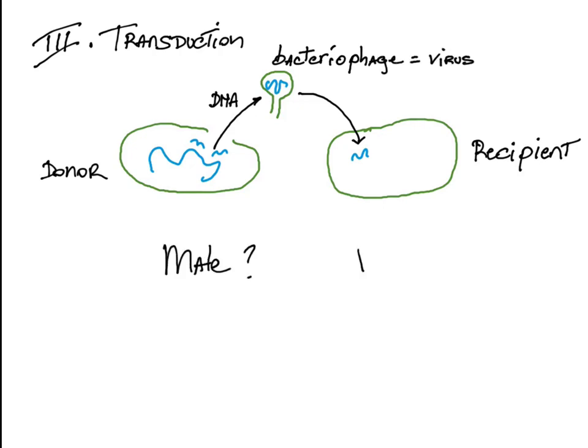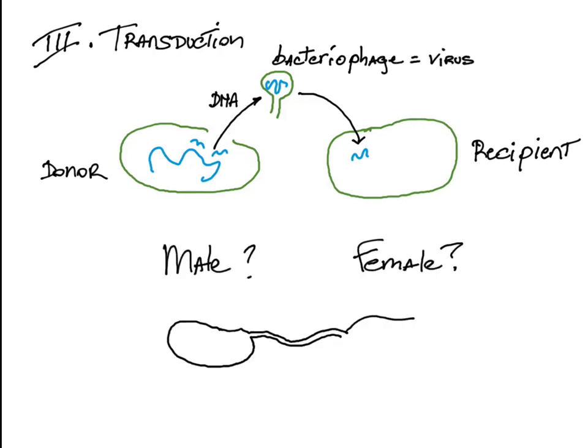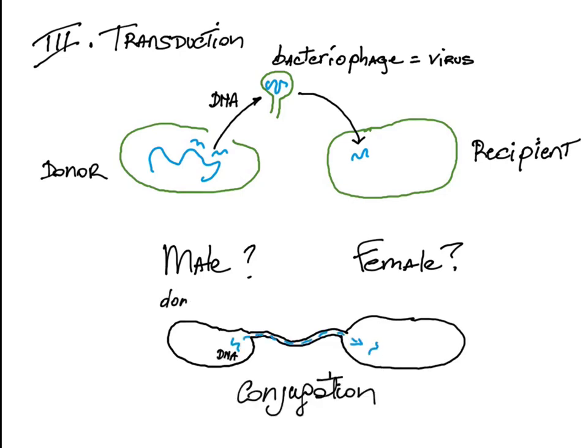Males and females. Given how donor and recipient cells function during DNA transfer, gender roles defined in the eukaryotic system do not apply well here. However, it is common to refer to donors of DNA as males and recipients as females.